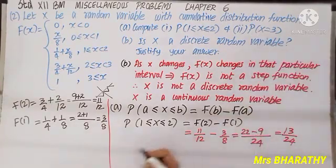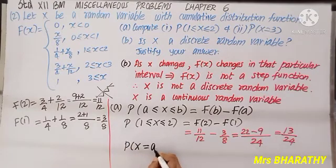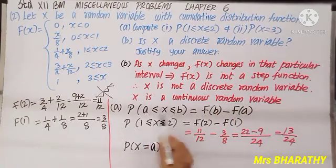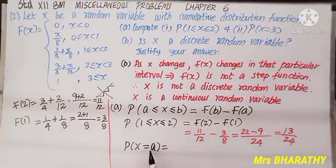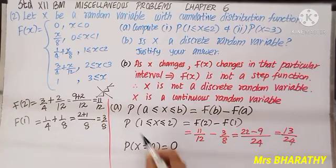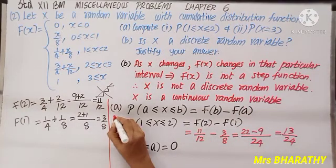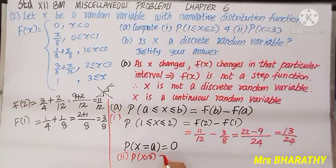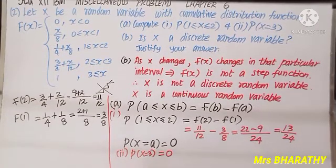For a continuous random variable, we can find the probability of X lying between two numbers, but not at a particular number. The formula is: P(X = a) = 0 for any specific value a. So for the second part, P(X = 3) = 0 immediately.